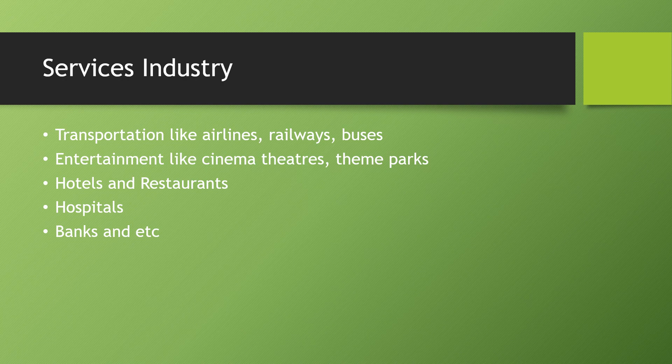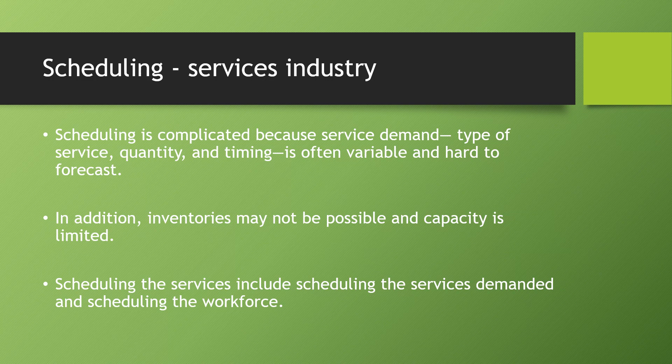The main difference between manufacturing and services industry is that scheduling is more complicated in services because of the demand factor. We cannot forecast the demand for services — the type of service, the quantity, and the timing. For example, in a restaurant, a customer may eat fried rice or parota one day, and the next day may have a different choice like dosa. So the type of service varies.